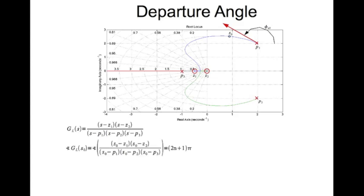Angle of the loop transfer function GL evaluated at S0 is equal to 2n plus 1 pi. The angle of this GL evaluated at S0 is in fact the angle of this entire term, and the angle of this term is given like so. So it's the angle of this term plus angle of this term minus the angle of this term minus angle of this term minus angle of this term.